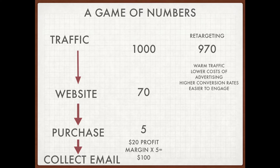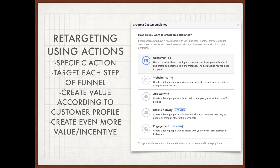You can potentially re-advertise to these people and they may be interested in your product again and eventually purchase. Retargeting is extremely powerful because there's lower cost of advertising and generally higher conversion rates on retargeting custom audiences. The picture on the right shows how to create a custom audience on Facebook — you can use data driven from your ads to pinpoint specific pockets of audiences to retarget.